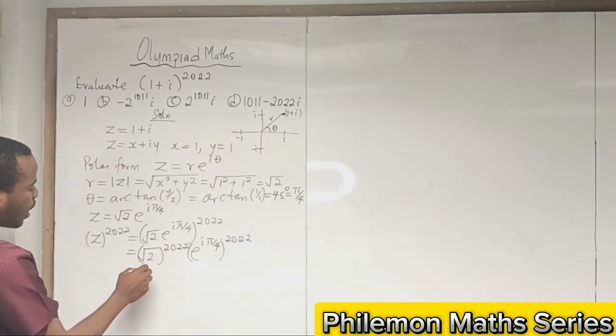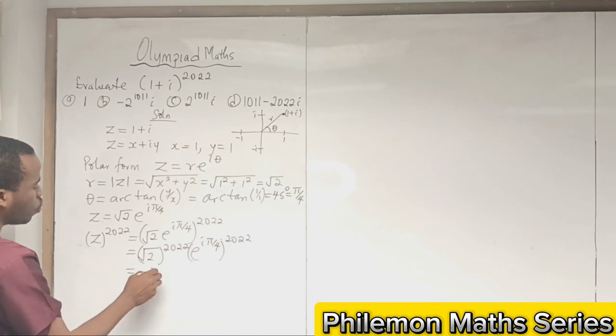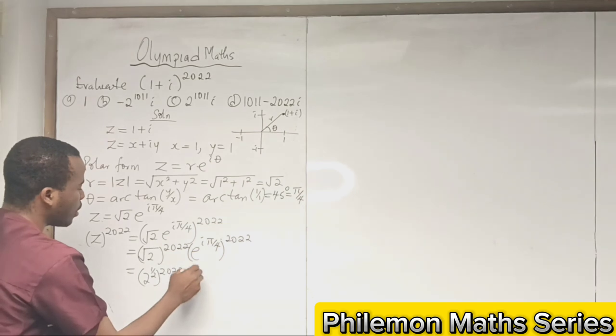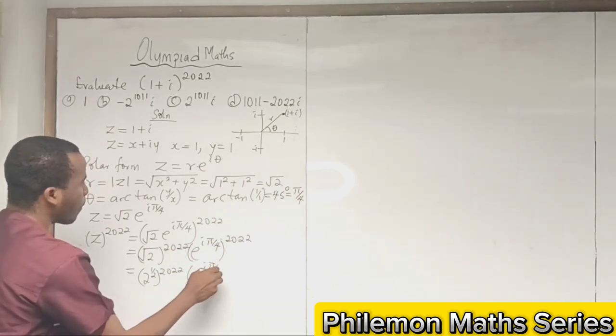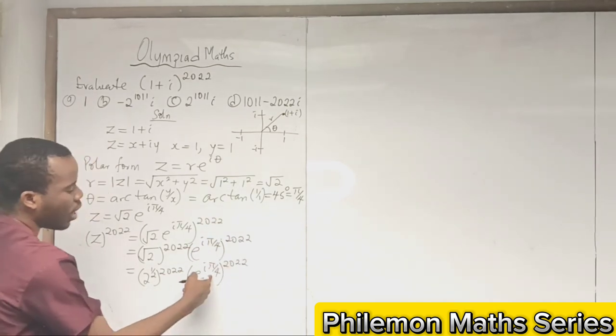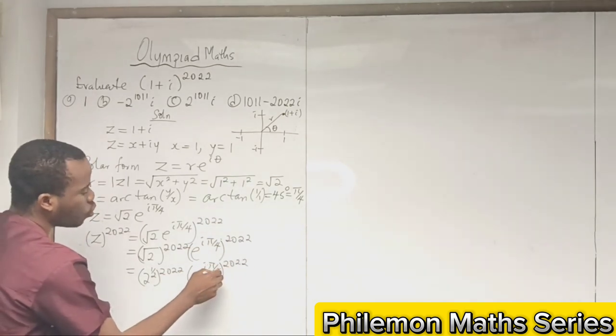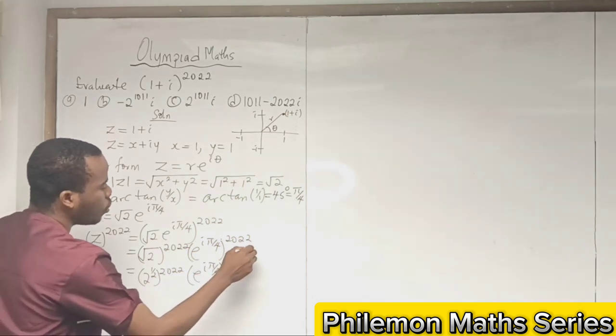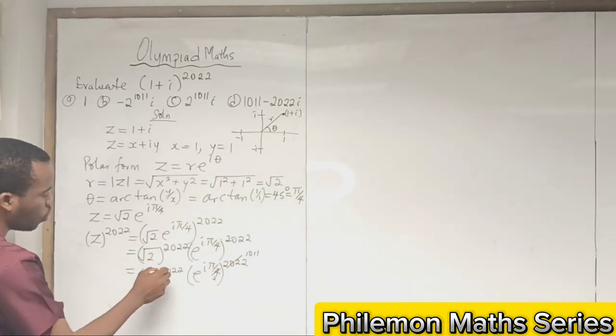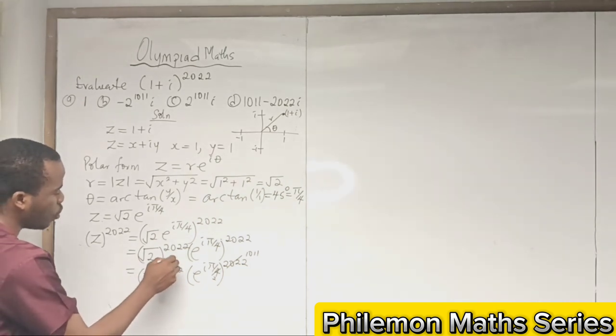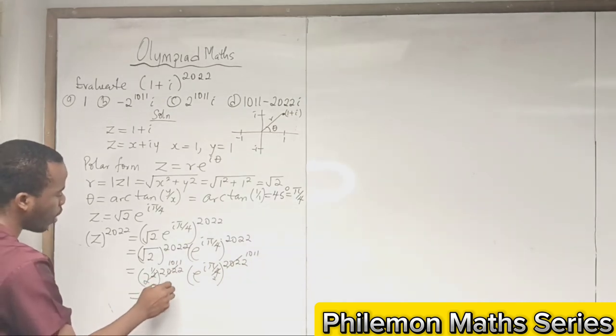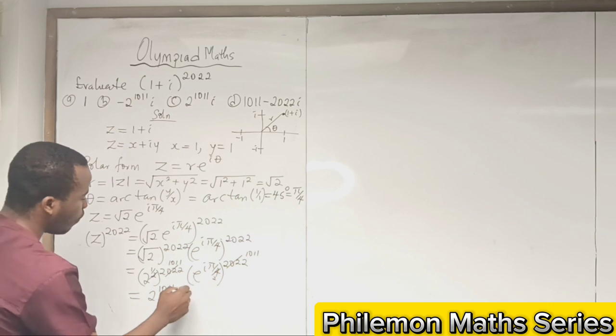We can write √2 as 2^(1/2), so (2^(1/2))^2022. When we multiply, 2 cancels: 2022/2 = 1011. So we have 2^1011.